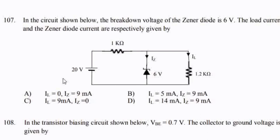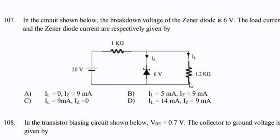Next question: in the circuit shown below, the breakdown voltage of the Zener diode is 6V. The load current and Zener diode current are respectively given by. The voltage is 6V; load current is equal to 6 divided by 1.2 kΩ, so load current equals 5 mA.